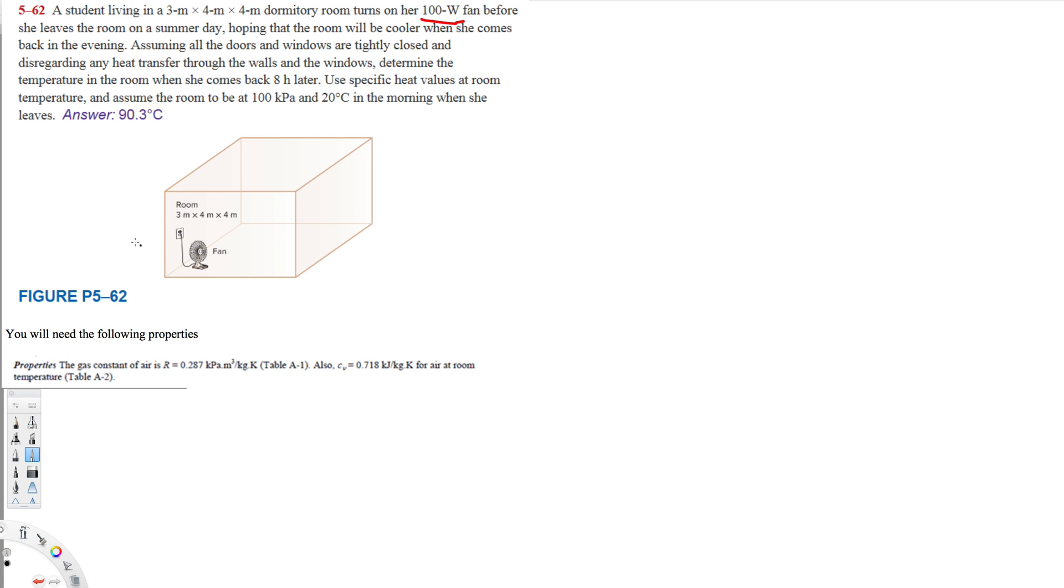What's going on guys, let's do this problem right here. The question is asking: a student living in a 3 times 4 times 4 dormitory room turns on a 100 watt fan before she leaves the room on a summer day, hoping that the room will be cooler when she comes back in the evening. Assuming all the doors and windows are tightly closed and disregarding any heat transfer through the walls and windows, determine the temperature in the room when she comes back 8 hours later. Use specific heat values at room temperature and assume the room to be at 100 kilopascals and 20 degrees Celsius in the morning when she leaves. So this is P1 and this is T1.